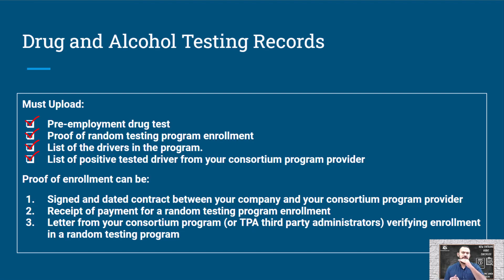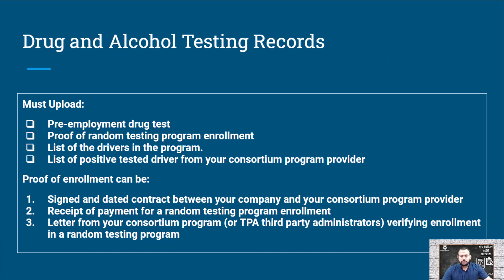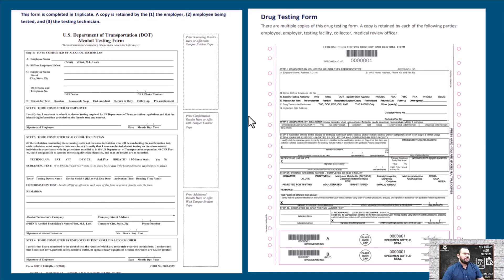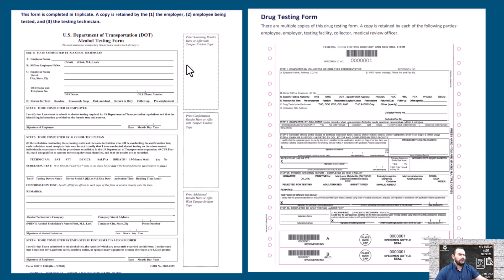Proof of enrollment can be a signed and dated contract between you, your company, and the consortium program provider; a receipt of payment for a random testing program enrollment; or a letter from your consortium program — also called a third-party administrator — verifying enrollment in the random testing program. There are a lot of different companies that do this, and they just have different ways of providing proof. You have the alcohol test on the left-hand side and the drug test on the right — your drug and alcohol consortium program provides these forms.